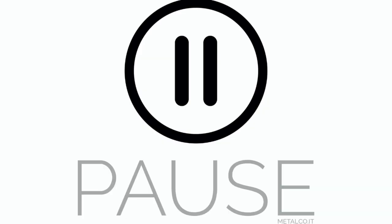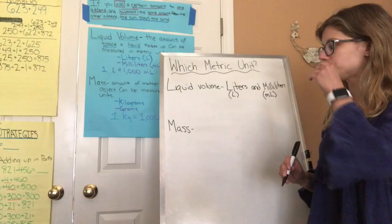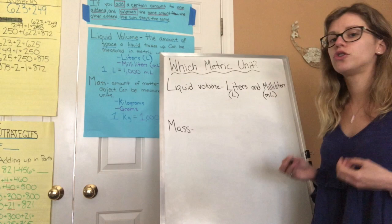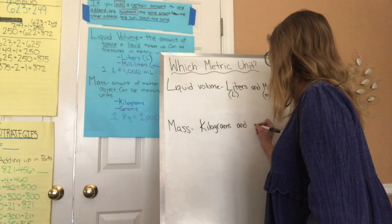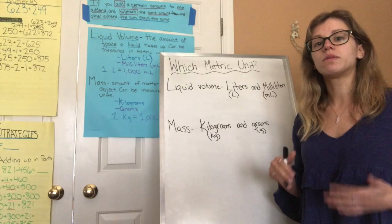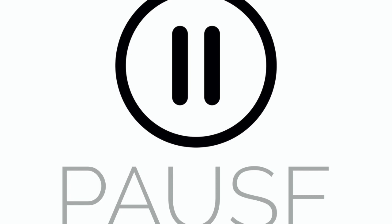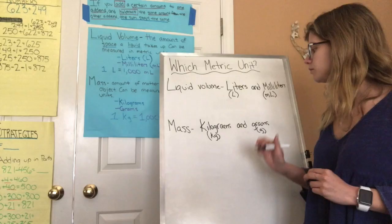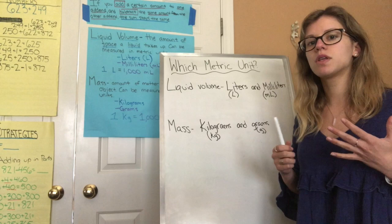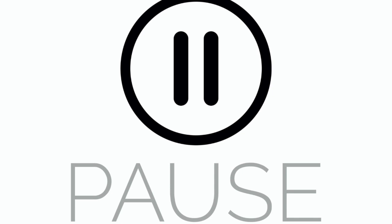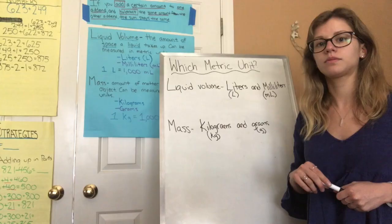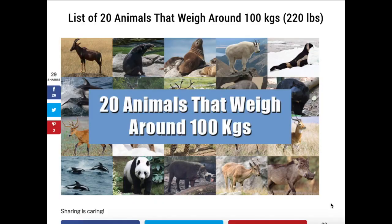Pause and think about what two metric units measure mass. The two metric units that measure mass are kilograms and grams. Kilograms shortened is kg, and grams shortened is g. Kilograms are the bigger unit of measurement. If I'm thinking about how much an animal weighs, will I use kilograms or grams? I would use kilograms since it's the larger unit of measurement.